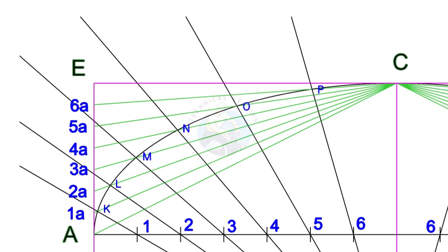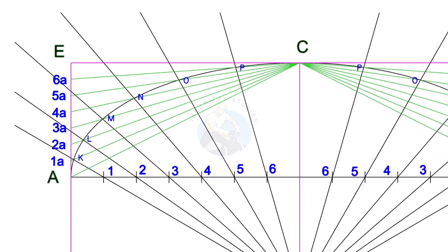Draw a smooth curve through points A, K, L, M, N, O, P, and C on both sides.